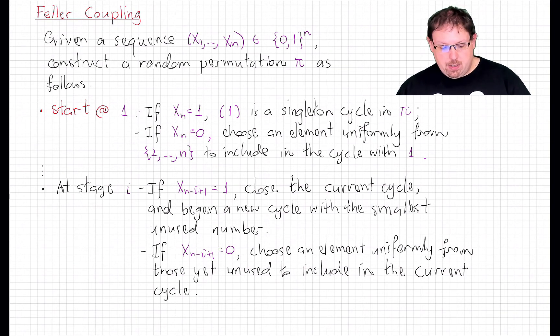At the beginning, we start at the number 1. And then we look at the sequence, X_1 through X_n. We actually read it backwards, the way that I've constructed things here. So look at X_n. If X_n is equal to 1, then we stop and we put 1 in a singleton cycle by itself and move on to the next step.